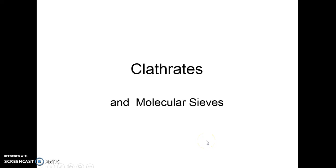In this lab we're going to look at clathrates and some other things in which size and shape are important. Up until now, pretty much all the chemistry we've looked at has been where the functional group is the key thing to understanding what happens to a molecule. With clathrates and molecular sieves and several other things, we're going to find that it's really the size and shape that is key to understanding why the phenomenon occurs.